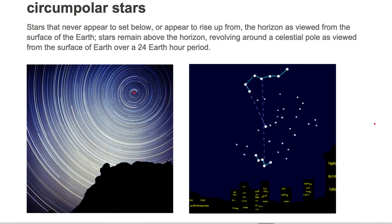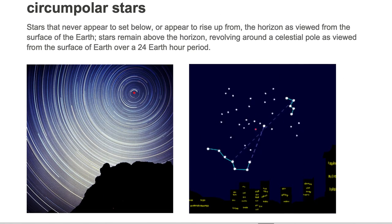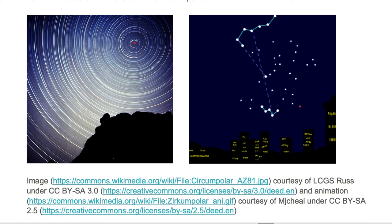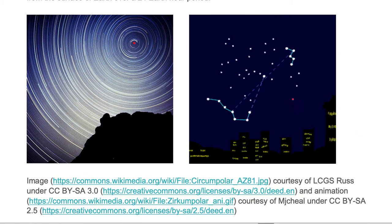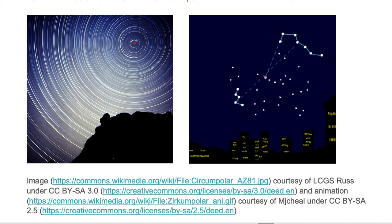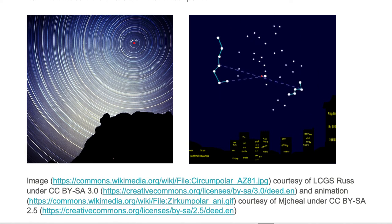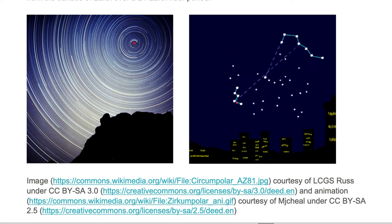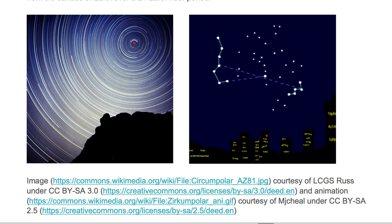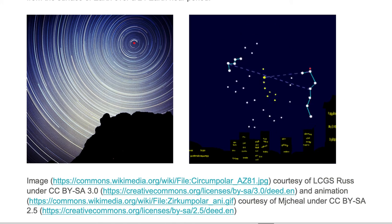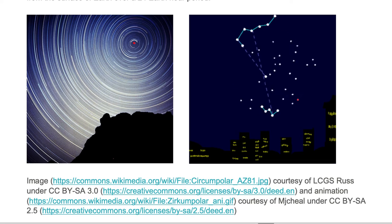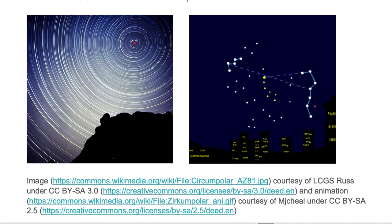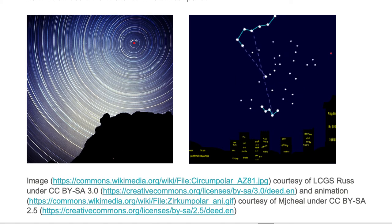As you can see from the animation on the right, we have some circumpolar stars. These are stars that appear to revolve around a common point, which is going to be our celestial pole. All the stars that you see remain up over a 24-hour Earth period, above the horizon, are called circumpolar stars. Any of the stars that appear to go into the ground and then come up from the ground are not circumpolar stars.